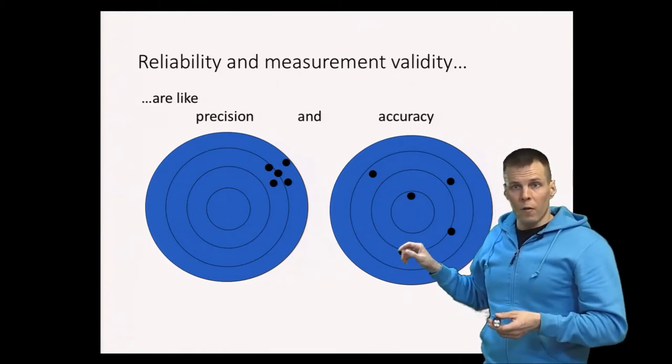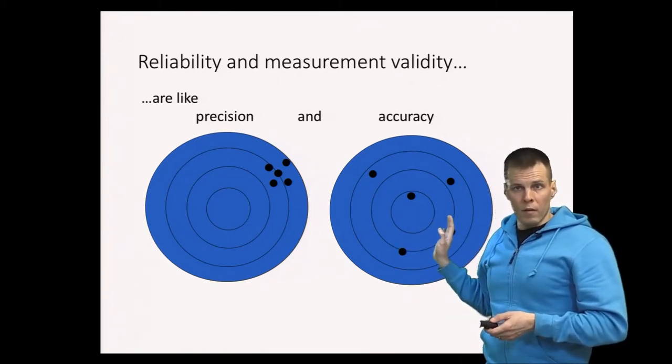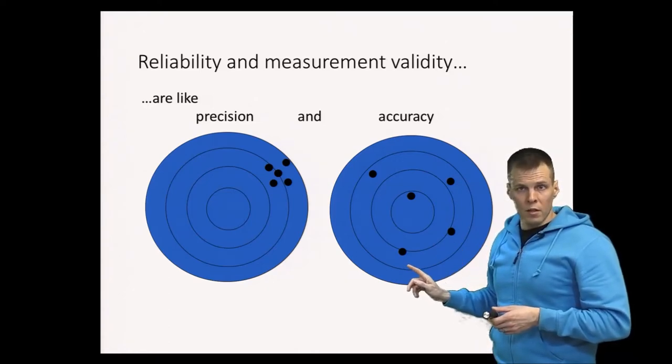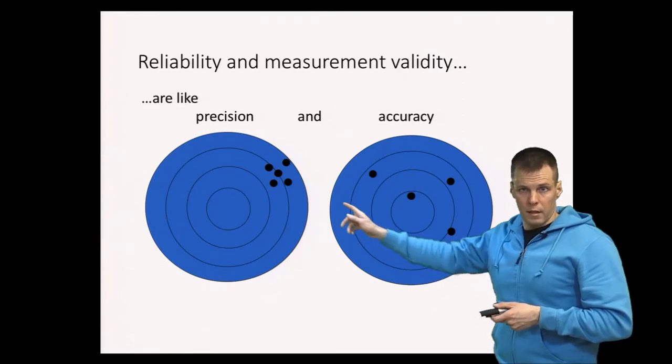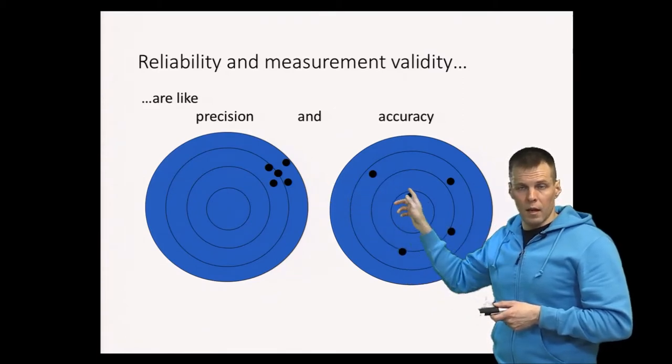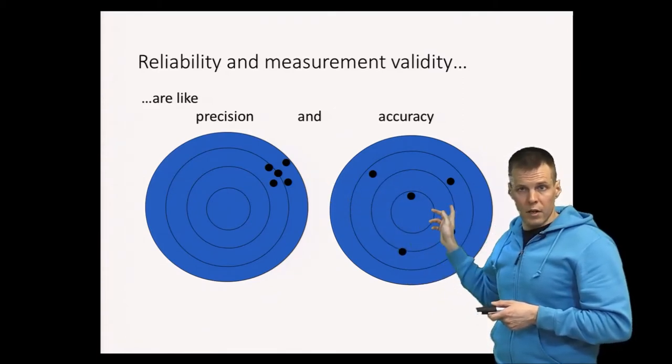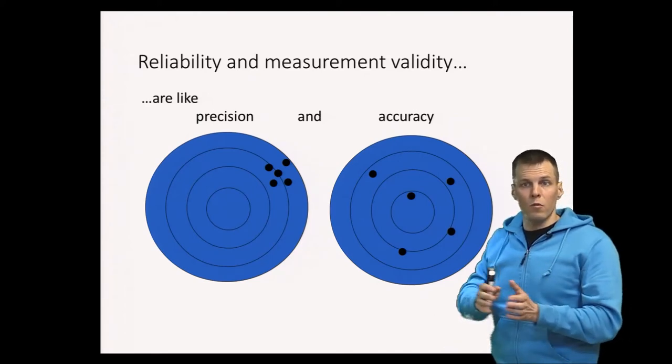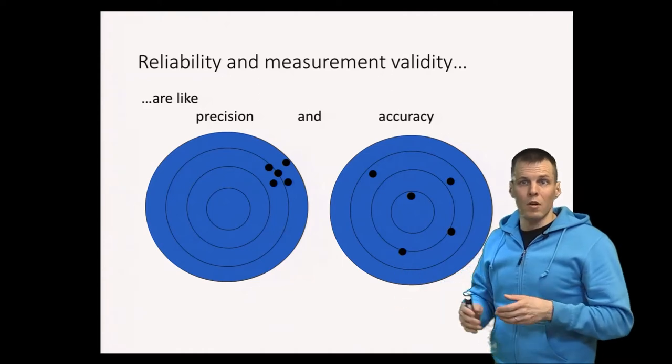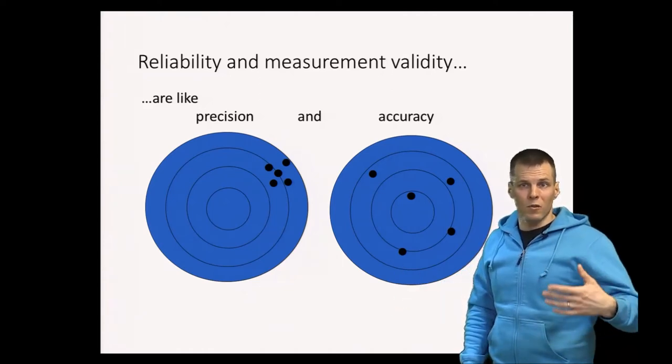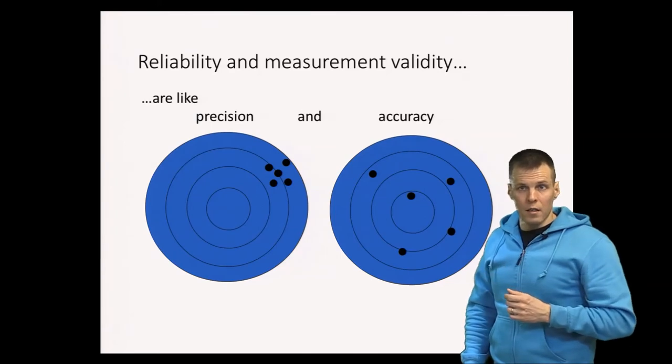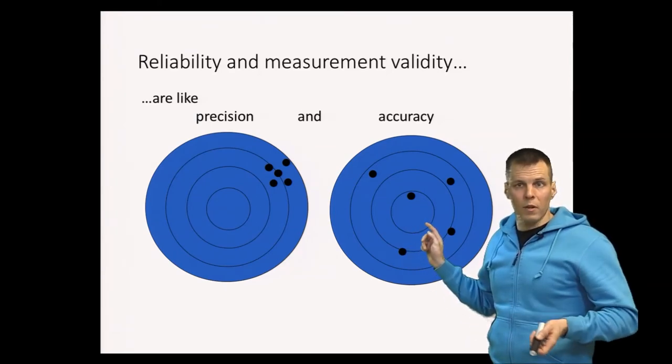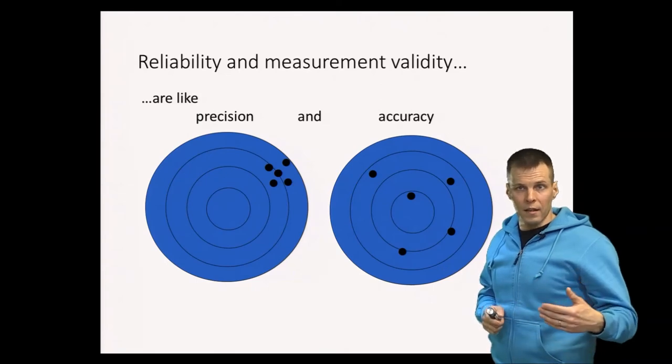The idea of no real validity without reliability basically refers to if you are just looking at one of these hits. So these hits individually are not very valuable because they're so dispersed, they're so unreliable. So in that sense if you just look at one hit on the target it's unlikely to be close to the bull's eye. So that's the argument for no validity without reliability.